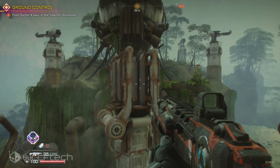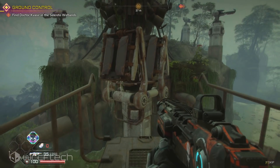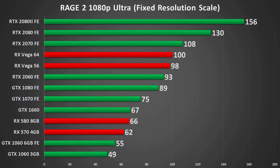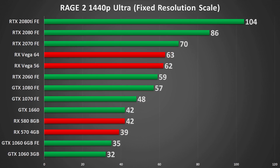At 1080p, as long as you're running a modern mid-range graphics card you won't have trouble clearing 60fps. The GTX 1066GB and 3GB variants do fall below that line, but tweaking settings should get those performing better. Even down to the RX 570, performance is quite solid. Overall, 1080p is not a demanding target in this game.